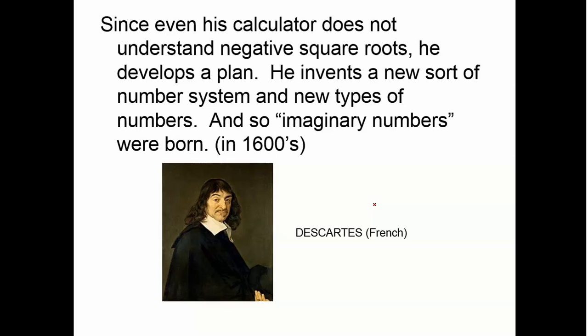What René Descartes did is he decided that, even though his calculator didn't understand negative square roots, he developed a plan. He invented a new sort of number system that gives new types of numbers. And so, the imaginary number system was born.